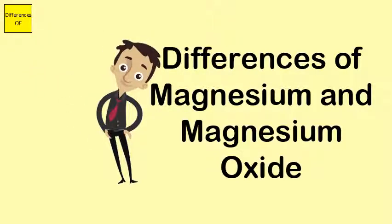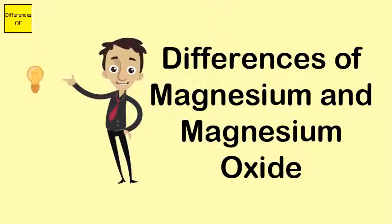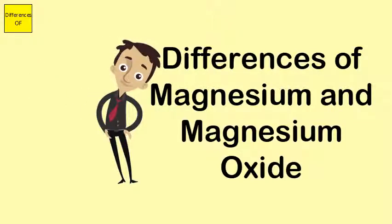Magnesium oxide is ceramic and is prone to breakage. Magnesium as a metal is a conductor. Magnesium oxide plays a reverse role as an insulator.